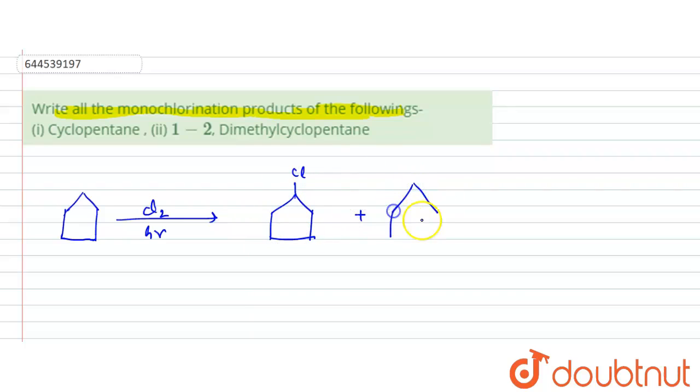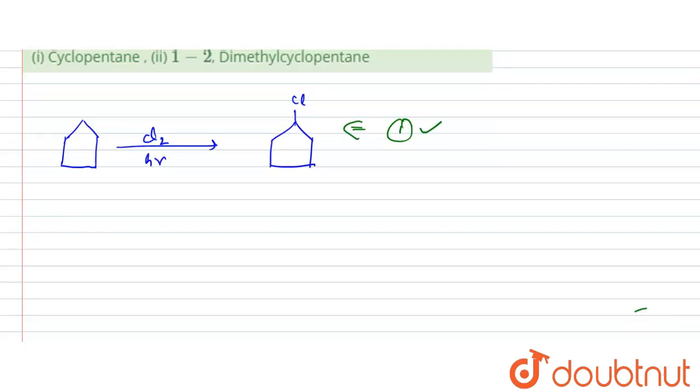Then secondly, what you can get? You can have another product like this, that at this position if chlorine is attached, then it is the same product. Since you are talking about monochlorinated product, if chlorine is attached at any position, it will be the same type of product because all are 2 degree carbon. All carbons which are present here are 2 degree carbon and therefore they all have 2 degree hydrogen atoms. So if you replace it, they will all give you identical product. So the monochlorination of cyclopentane gives you only this type of product.